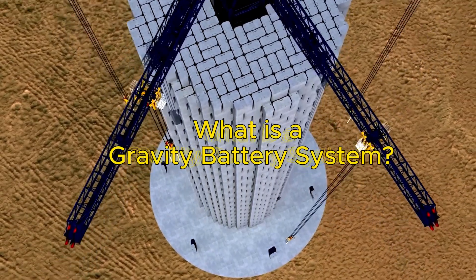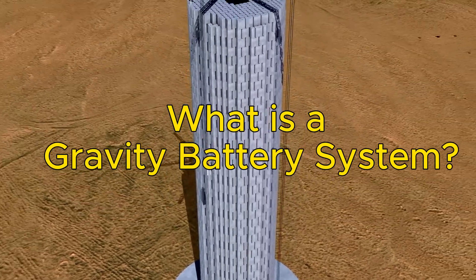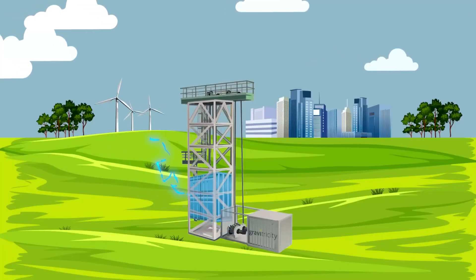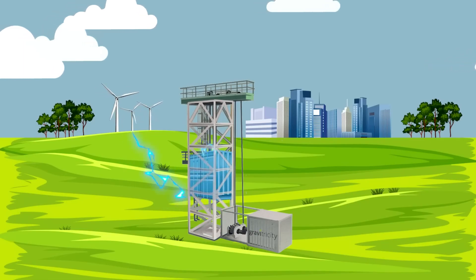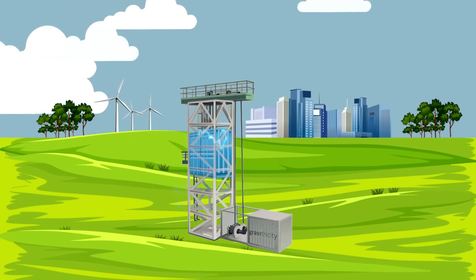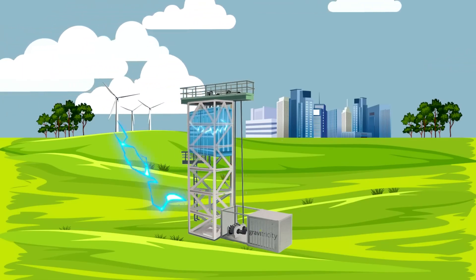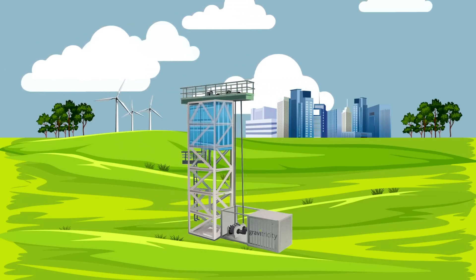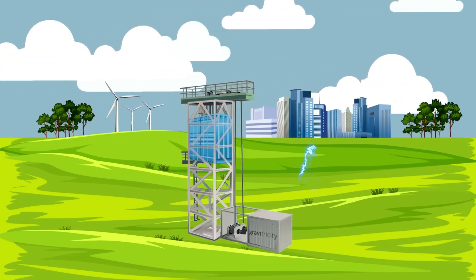A gravity battery system is a type of electricity storage device that stores gravitational energy, the energy stored in an object resulting from a change in height due to gravity, also called potential energy.